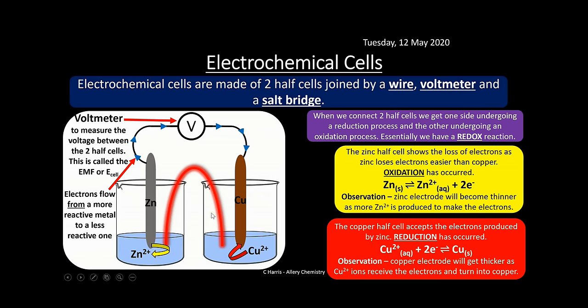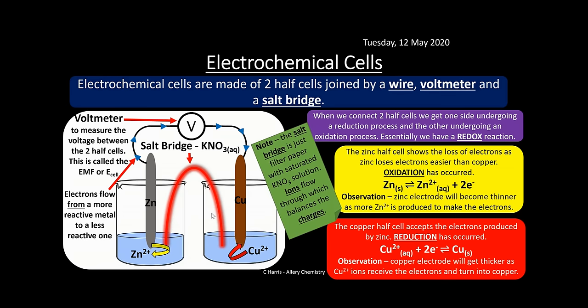The salt bridge's purpose is to allow ions to flow through and balance the charges in the cell. It contains free-moving ions and completes the circuit. Without the salt bridge, the cell simply would not work.